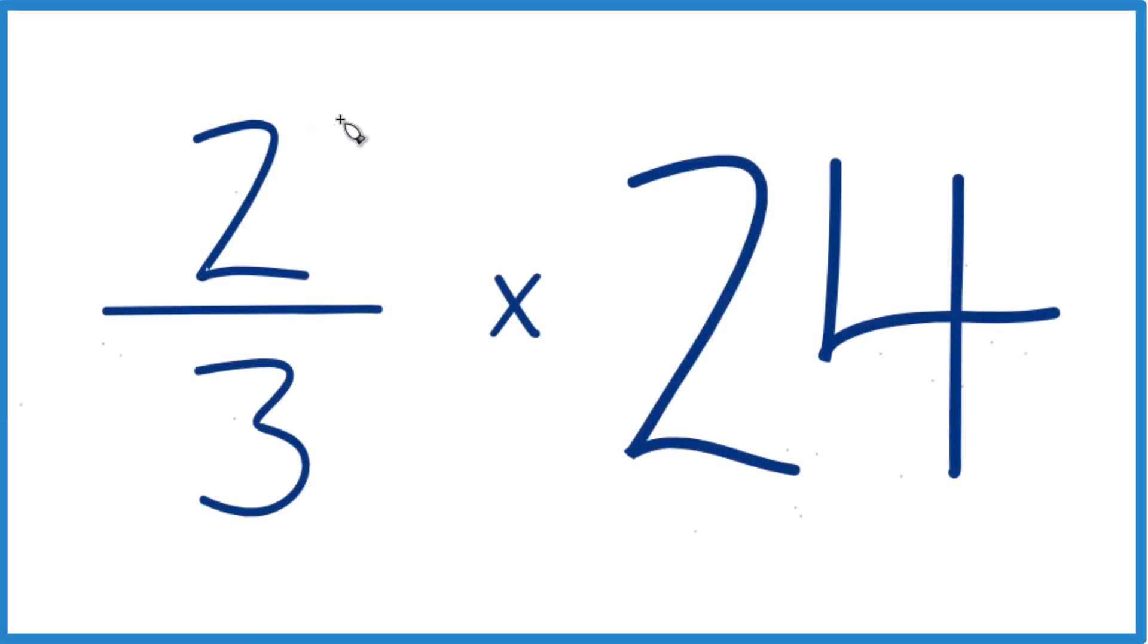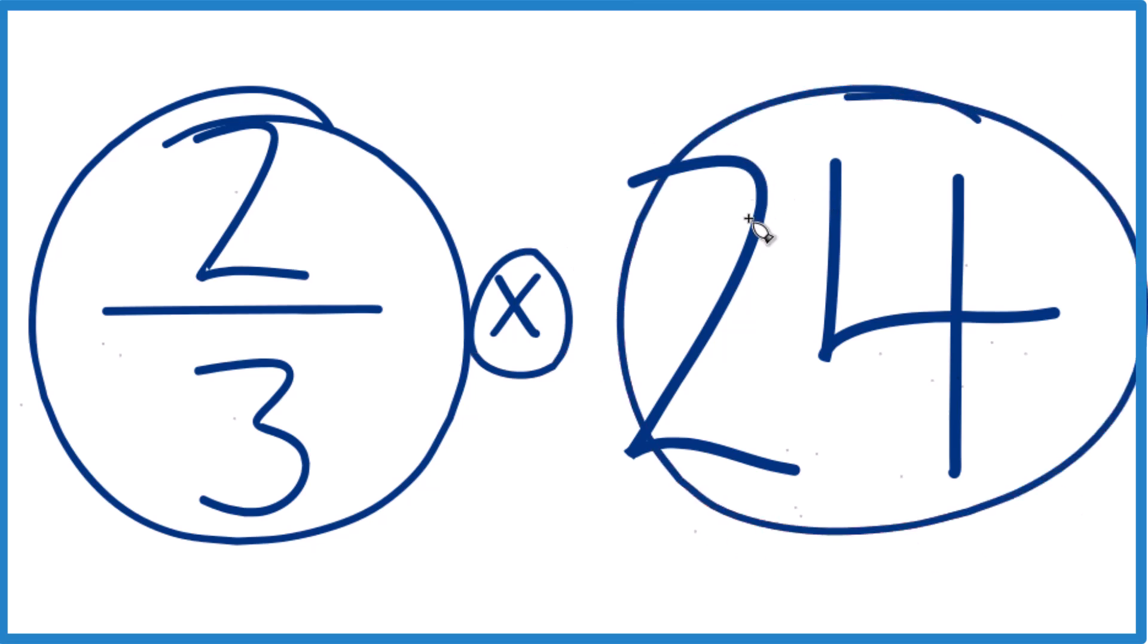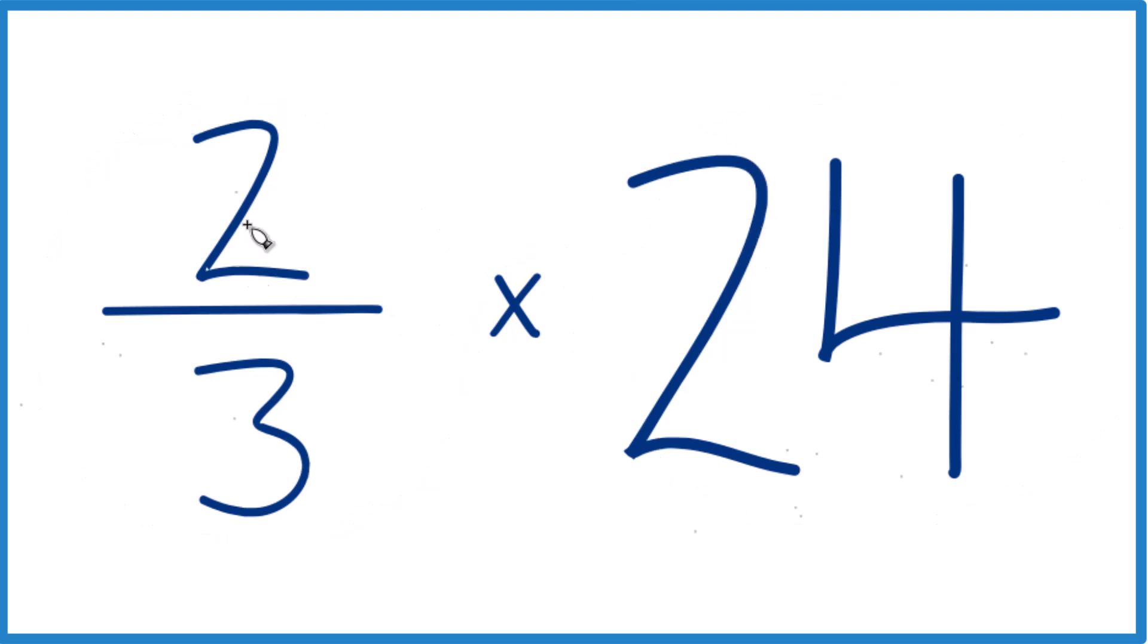Here's how you figure out what you get when you take two-thirds times 24. So when we look at this, two-thirds times 24.